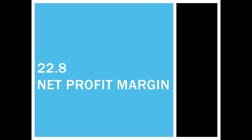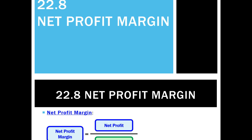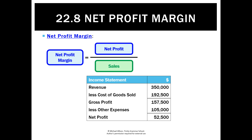We learned about the gross profit margin in our previous lesson. Now we need to know about the net profit margin. The net profit margin is going to be the ultimate figure of profit for the period. To calculate it, we take our net profit and divide it by sales.